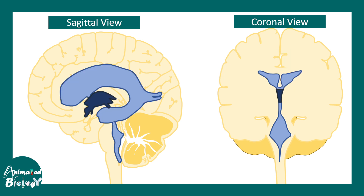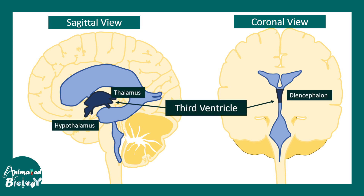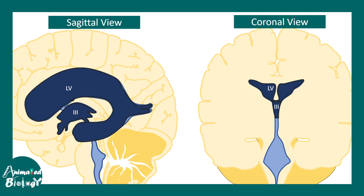After the lateral ventricles, there is the third ventricle, which is situated adjacent to the thalamus and hypothalamus — that means they are diencephalic ventricles. The lateral ventricle and the third ventricle are interconnected via the foramen of Monroe, which is the passageway for cerebrospinal fluid from the lateral ventricle to the third ventricle.